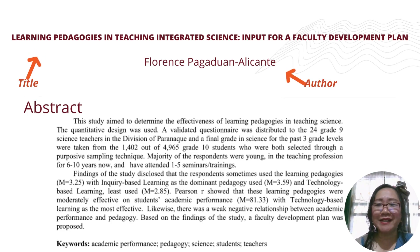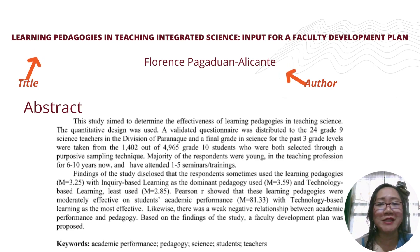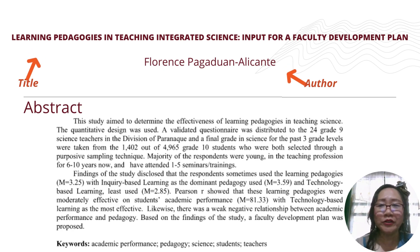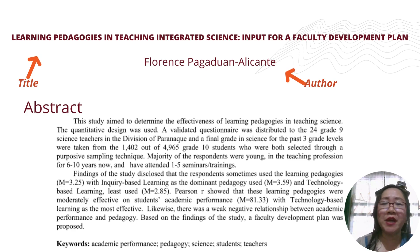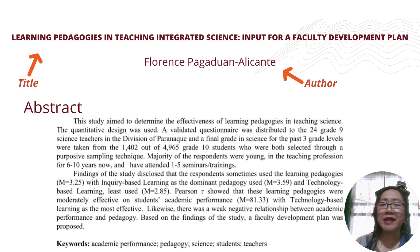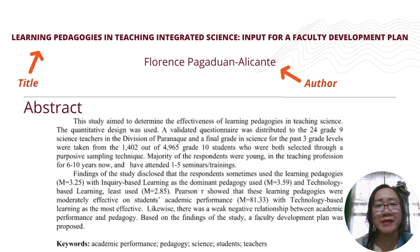Below the title is the author. In this example, the author is Florence Pagaduan Alicante. The author is the one who writes the article or the research paper. If there are multiple authors — two or more — just write all the names of the authors separated by a comma.